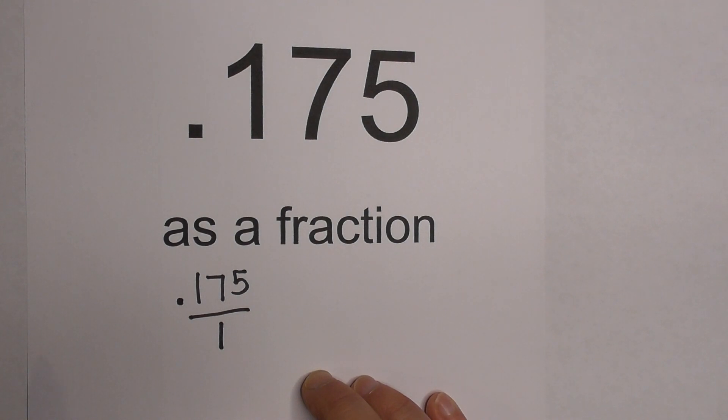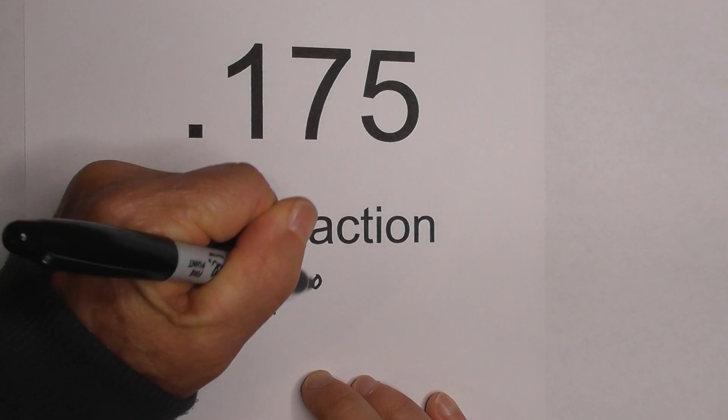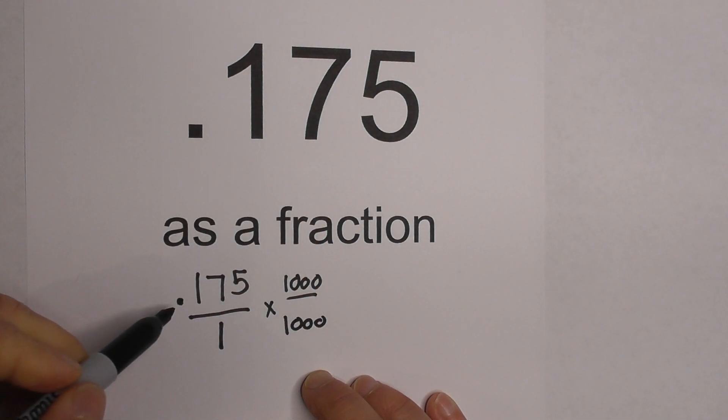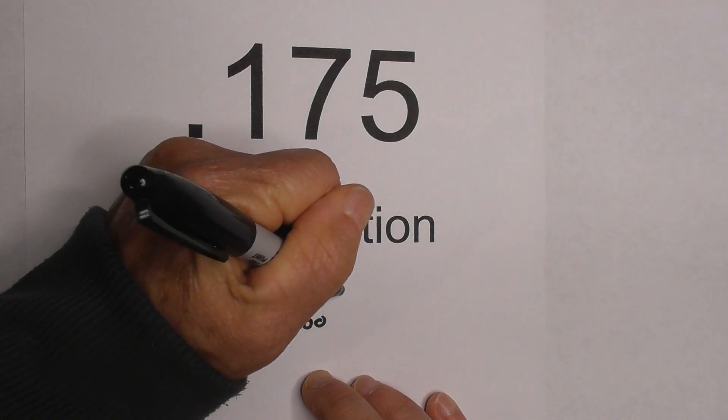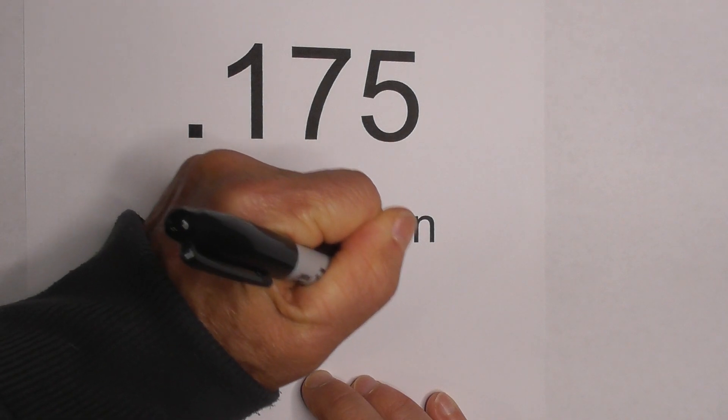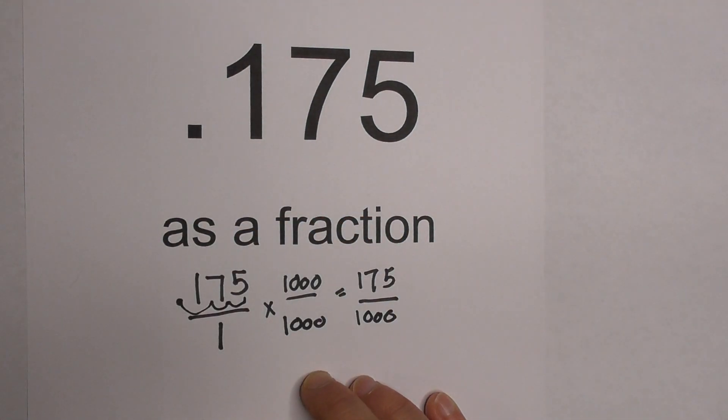So what we can do is multiply the numerator and the denominator by 1,000. And what that does is, first when you multiply 175 thousandths times 1,000, you move the decimal place 1, 2, 3, and you get 175. And then obviously 1 times 1,000 is 1,000.